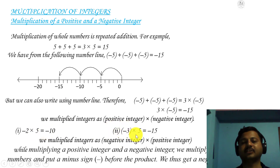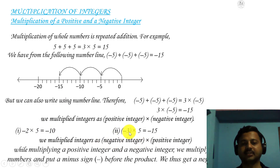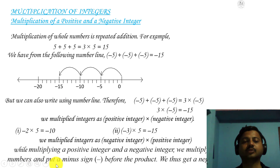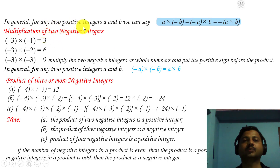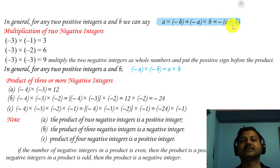Second example: minus 3 into 5 is minus 15. Here minus 2 and minus 3 are negative integers and 5 is the positive integer. While multiplying a positive integer and a negative integer, we multiply them as whole numbers and then put a minus sign before the product — we thus get a negative integer. In general, for any two positive integers a and b: a into (minus b) or (minus a) into b equals minus of (a into b).